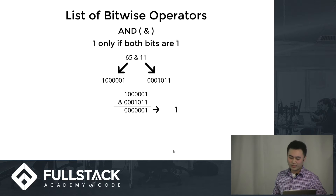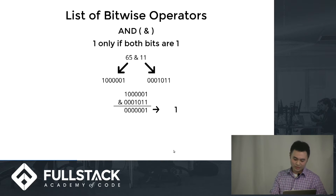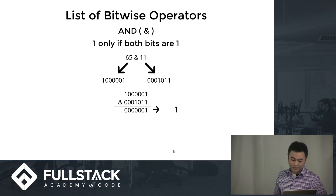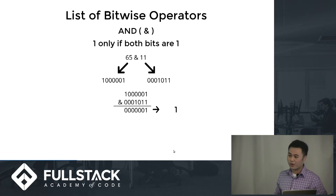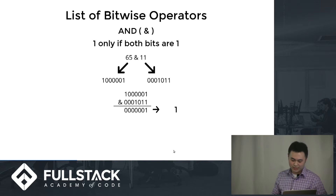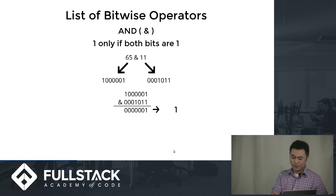So here's a list of the bitwise operators. AND: 1 only if both bits are 1. So 1001001 AND 0000111 — when ANDed together, you get 0000001.